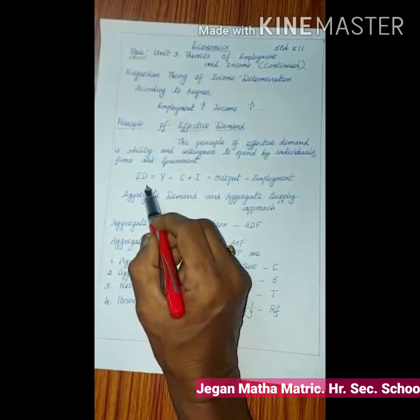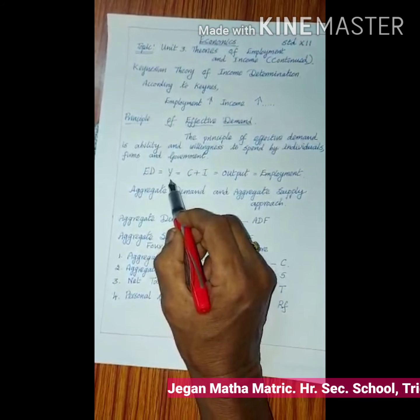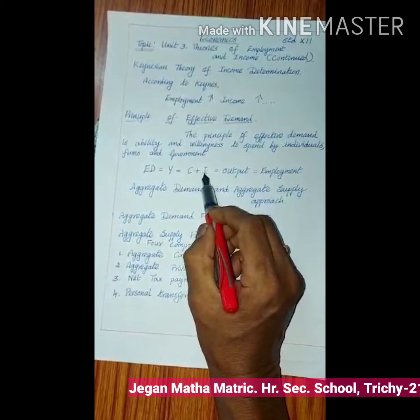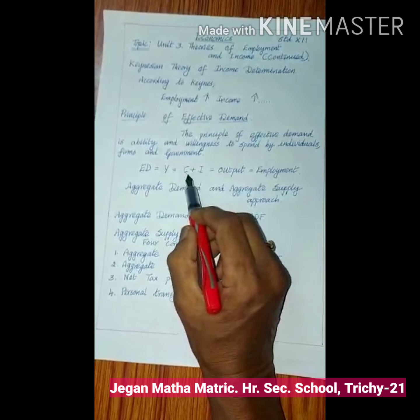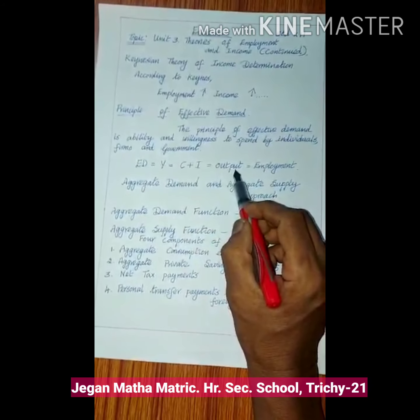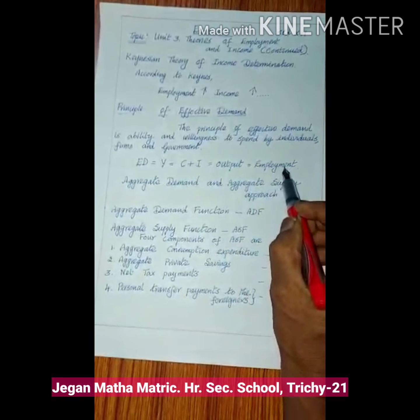Effective demand equals income Y equals C (consumption) plus I (investment), C plus I equals output production equals employment.